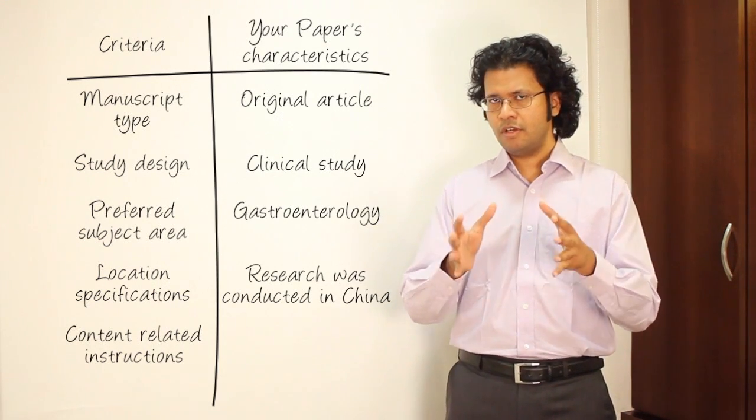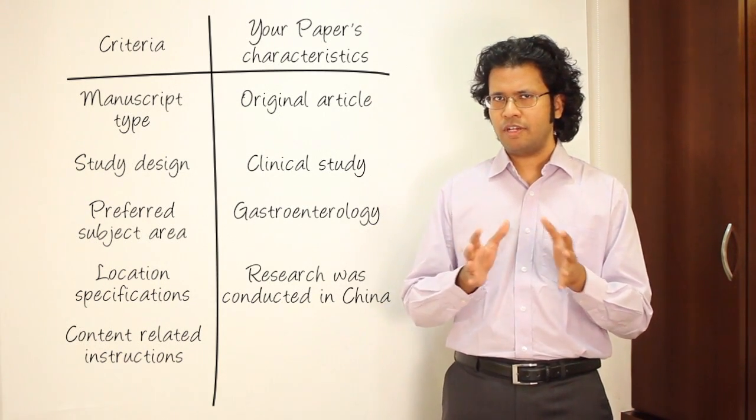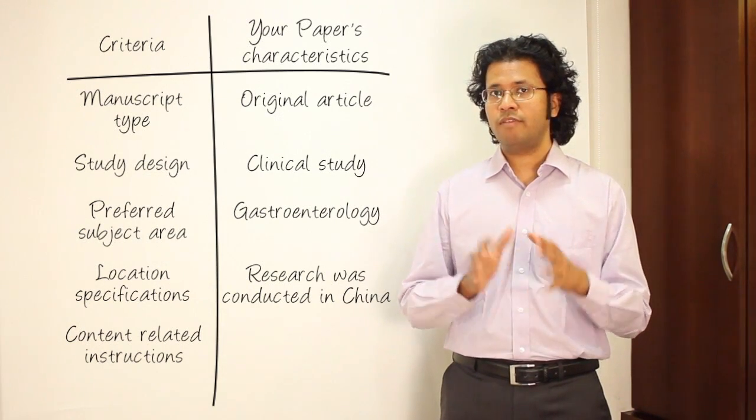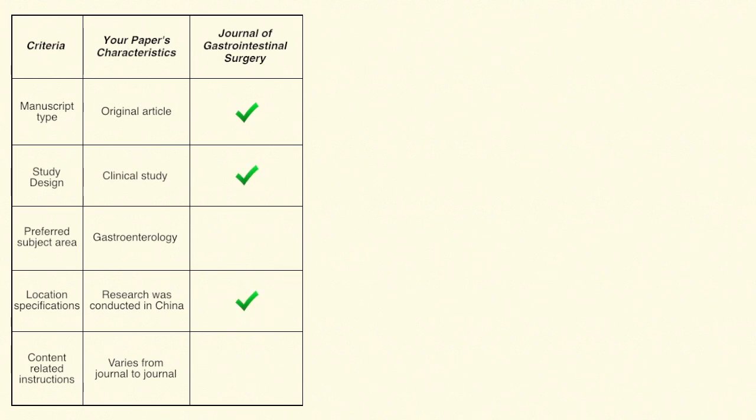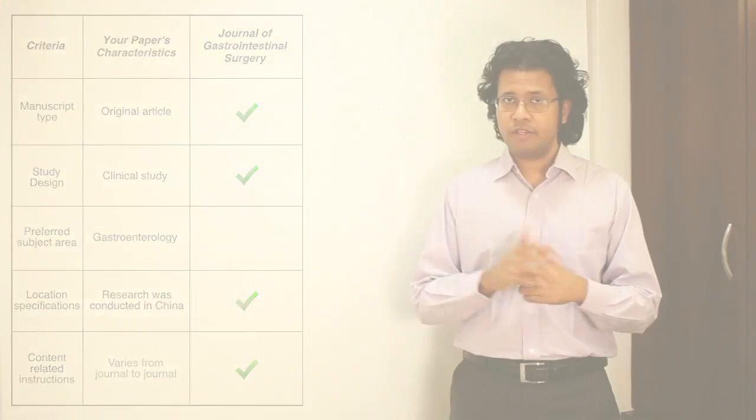Now that we have these qualities ready, let's try to match your paper with the five journals. First, we have the Journal of Gastrointestinal Surgery. This journal publishes original articles and clinical studies, there are no location specifications, and the content-related instructions also match. But your study proposes a non-invasive strategy for the treatment of gastric stromal tumour, whereas the Journal of Gastrointestinal Surgery focuses purely on surgery. So this is a point of mismatch.